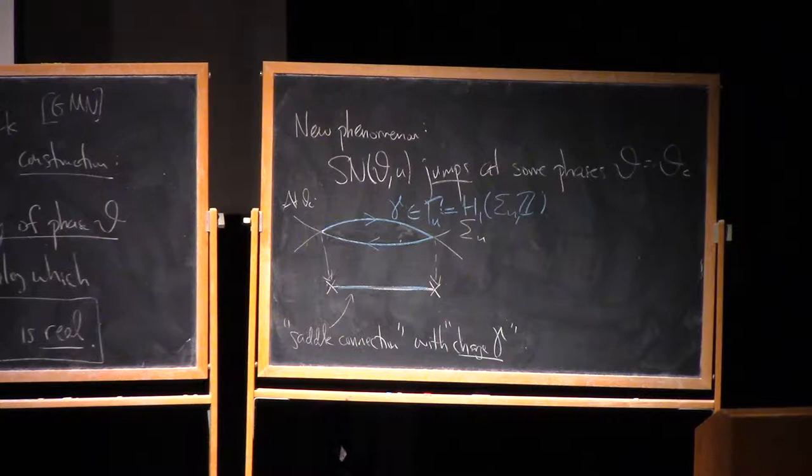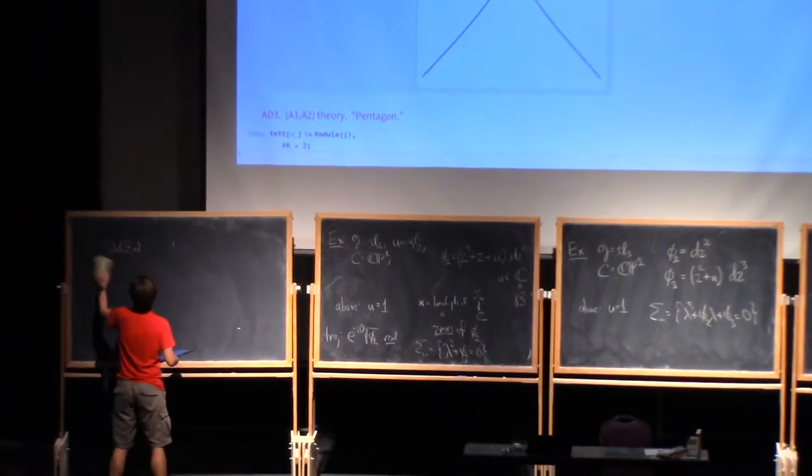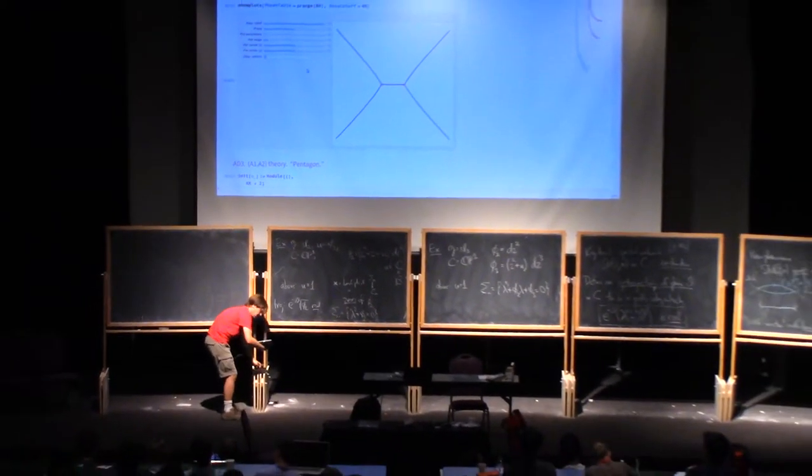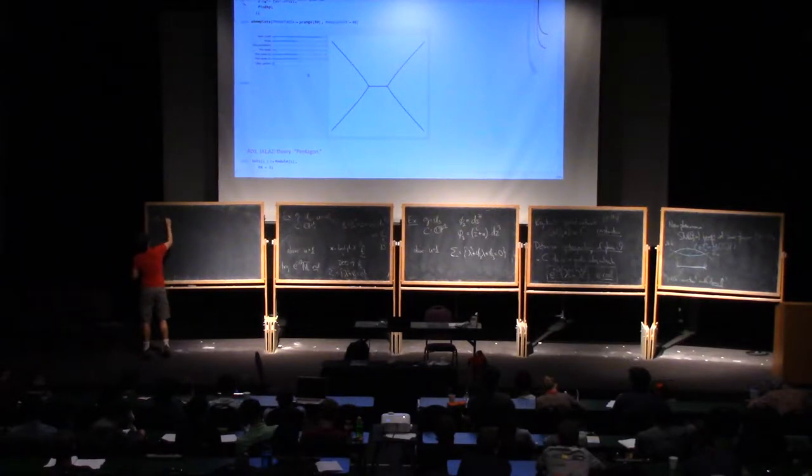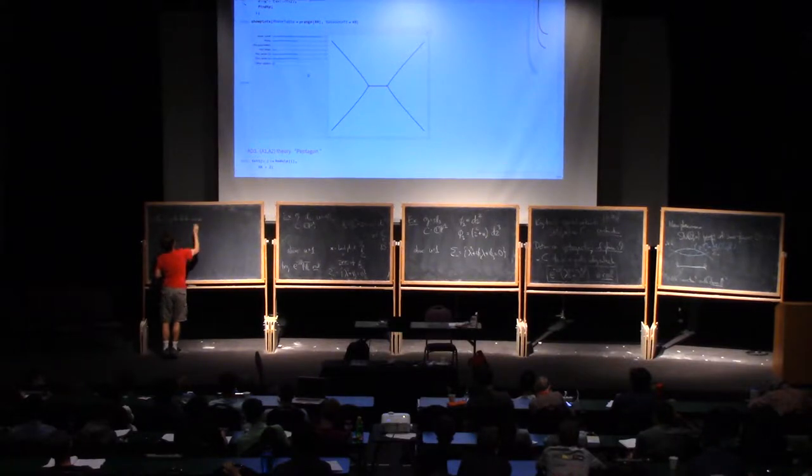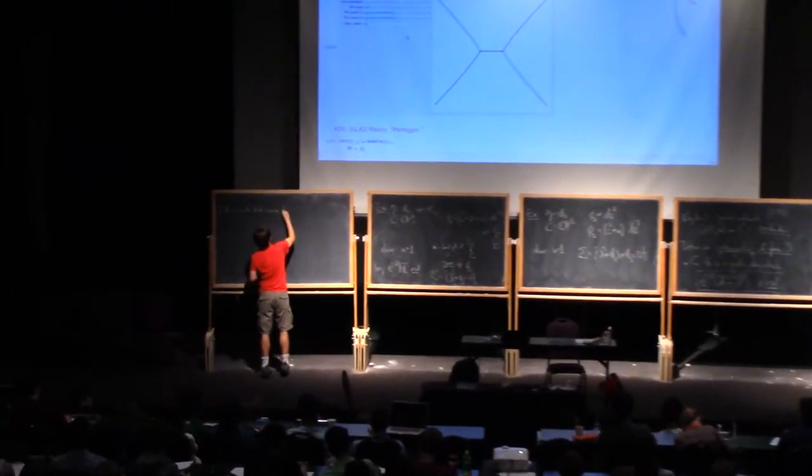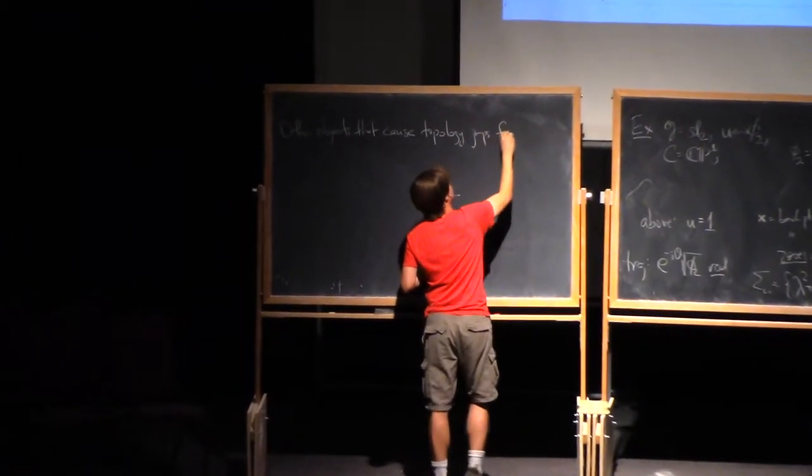That's not the only kind of topology change that you get in this business. So in some cases, the simplest kinds of topology change come from the saddle connections, but there's also other things that happen. So other objects that cause topology jumps for the spectral network.